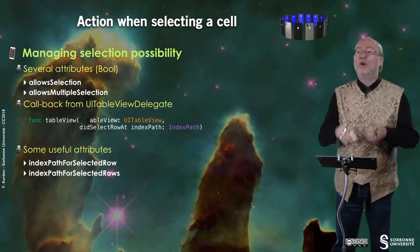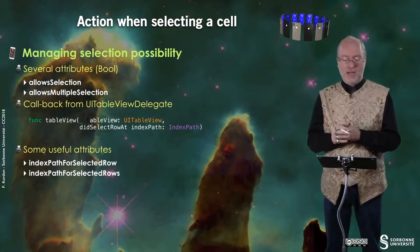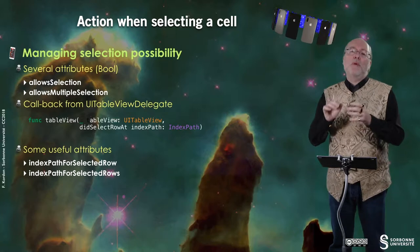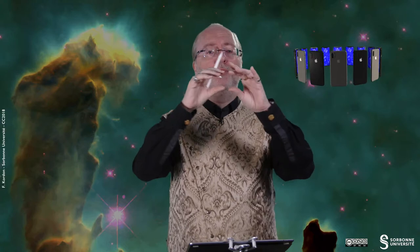You can also associate an action to tapping on a cell. First, you need to enable selection. You have two Boolean attributes: the first allows selection of a cell, and you can also allow multiple selection. Then the action will probably be associated to a button in the navigation bar that is embedded in the UI NavigationController associated to the UI TableView controller.